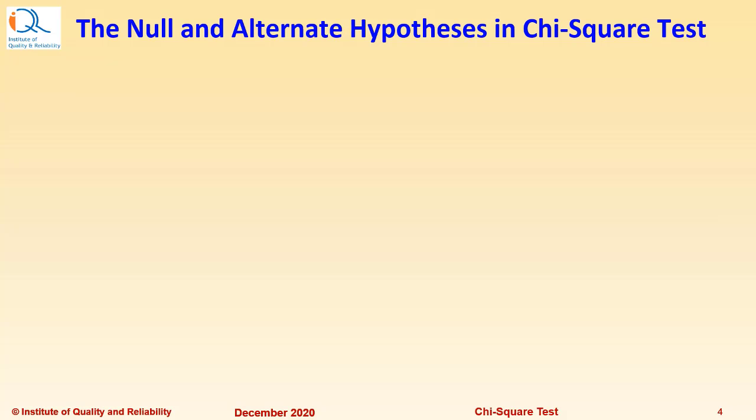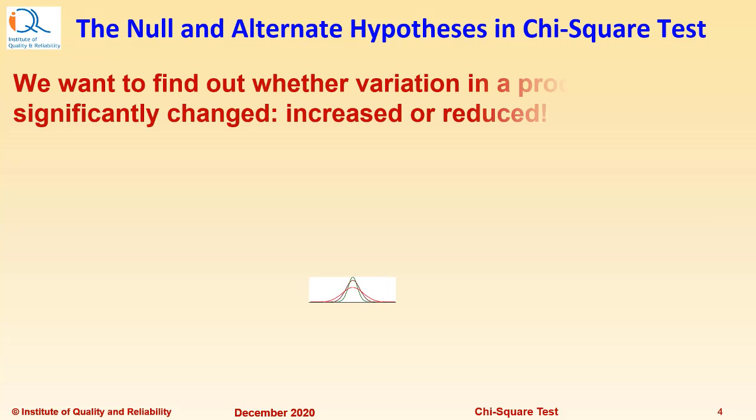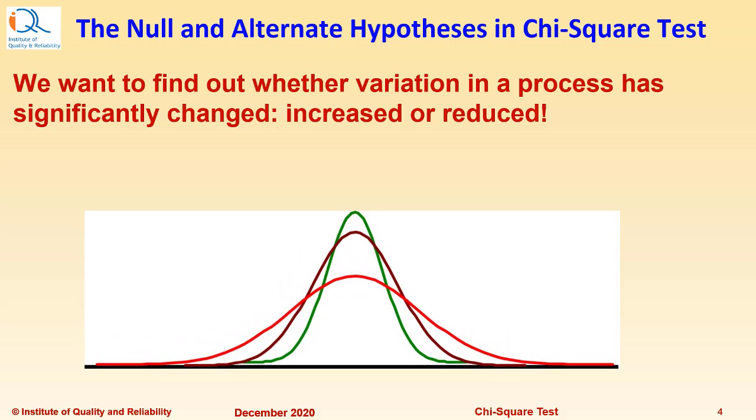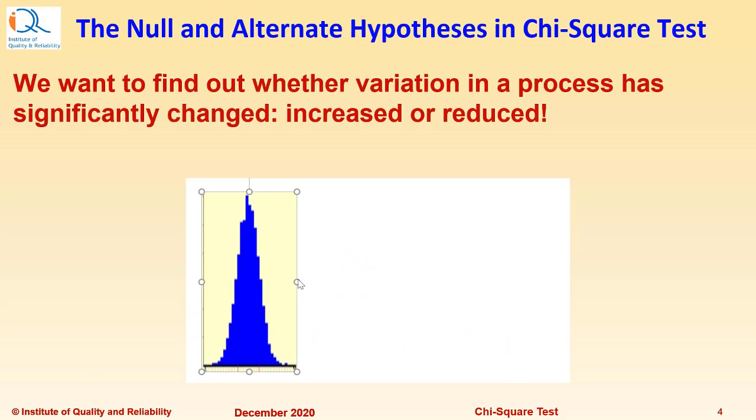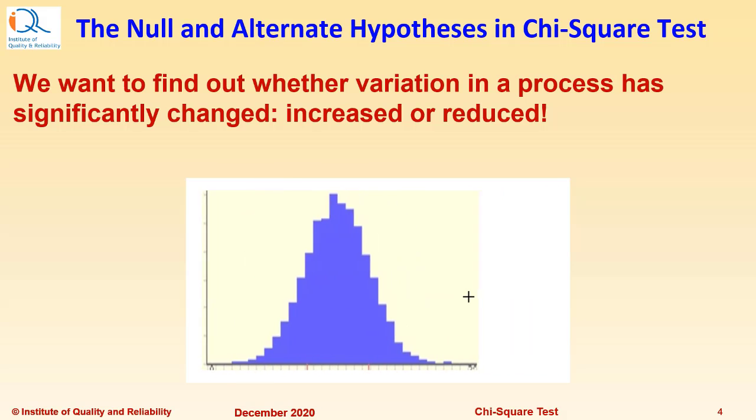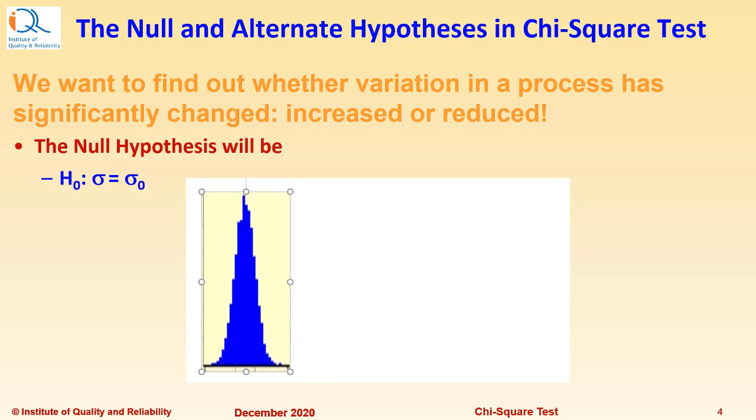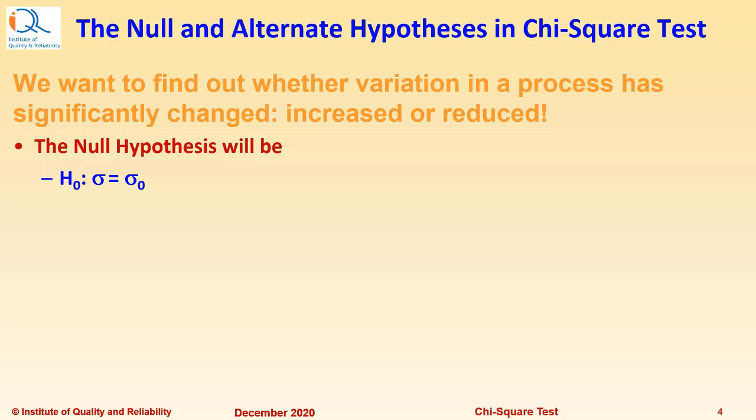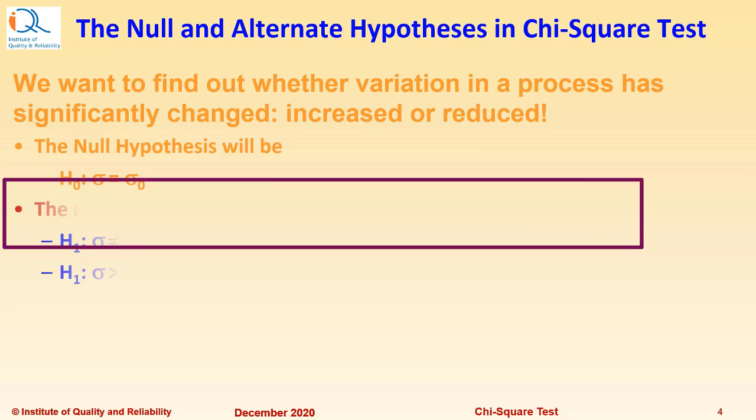The Null and Alternate Hypothesis in Chi-Square Test. We want to find out whether variation in a process has significantly changed, either increased or reduced. Then the Null Hypothesis will be H₀: σ = σ₀. Sigma 0 could be either historical value of the standard deviation or it could be a reference value of the standard deviation.